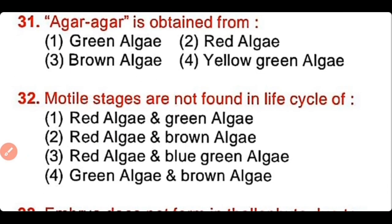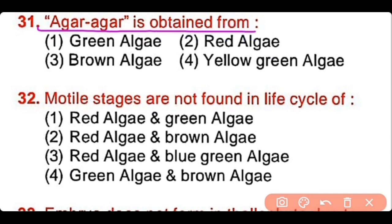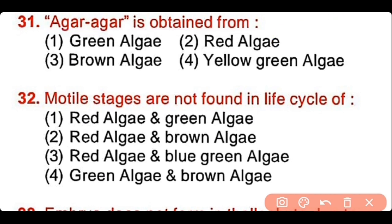Question number 31: Agar agar is obtained from green algae, red algae, brown algae, or yellow-green algae? The correct answer is option 2. Agar agar is obtained from red algae.